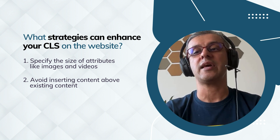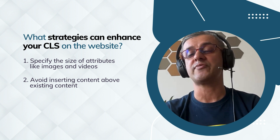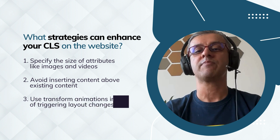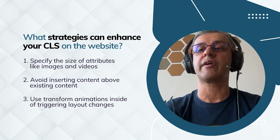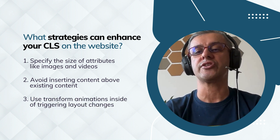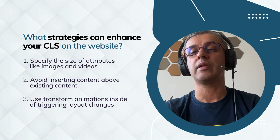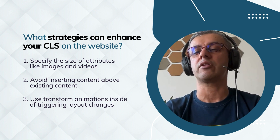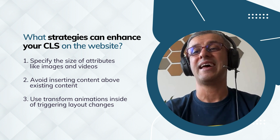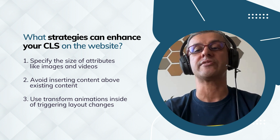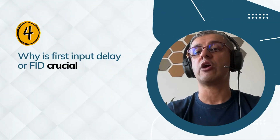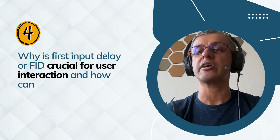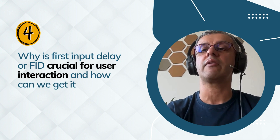That is also a place where you can get penalties from Google. Finally, use transform animations instead of flickering layout changes so that users can understand what's happening on your website, making it a better, more usable experience. Question number four: why is First Input Delay (FID) crucial for user interaction and how can we minimize it?